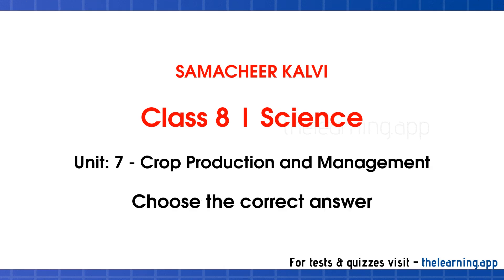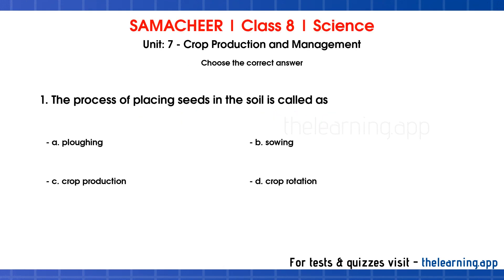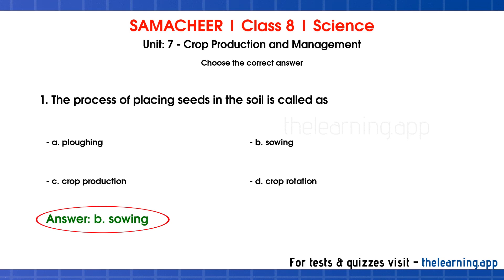First, choose the correct answer. First question: the process of placing seeds in the soil is called as — options are A. plowing, B. sowing, C. crop production, D. crop rotation. The correct answer is option B, sowing. Sowing refers to placing seeds in the soil.